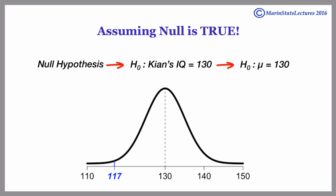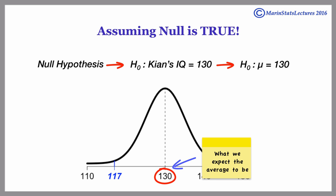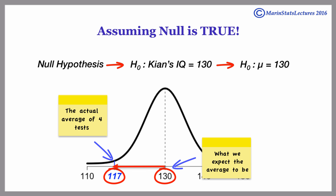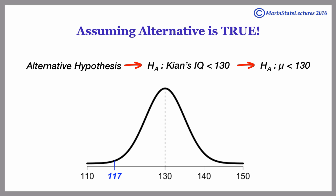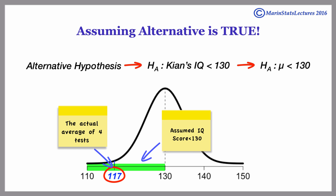Getting back to our null hypothesis, we didn't just start by assuming this to be true because Kyan is our buddy. It's because assuming this to be true, we know exactly what we'd expect to see in our sample. We'd expect that the average IQ score of the four tests should be 130. We can then measure how compatible the actual average score over the four tests is — say an average of 117 — with the assumption that it should be 130. If, on the other hand, we wanted to begin by assuming that the alternative were true, we wouldn't have an exact value to compare his average over the four tests to, and we couldn't easily measure how compatible his average of 117 over the four tests is to an assumed IQ of something less than 130.